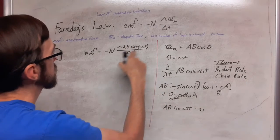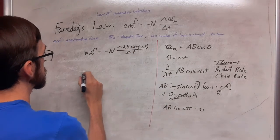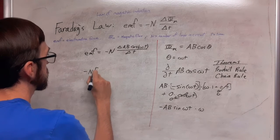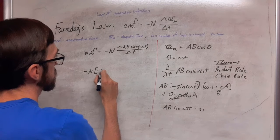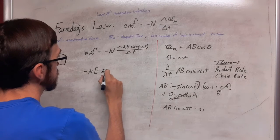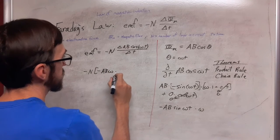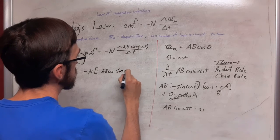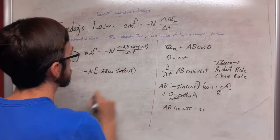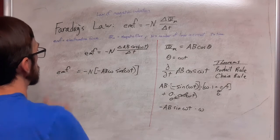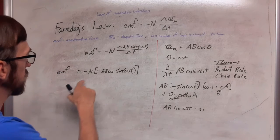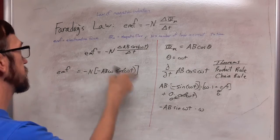So that's going to substitute in for this ratio. So we have negative N times negative AB omega sin omega t and that is the electromotive force.